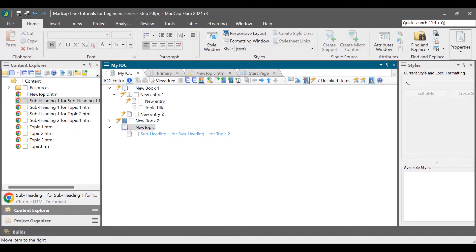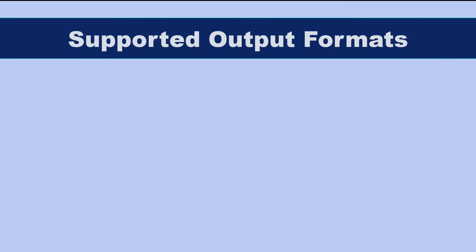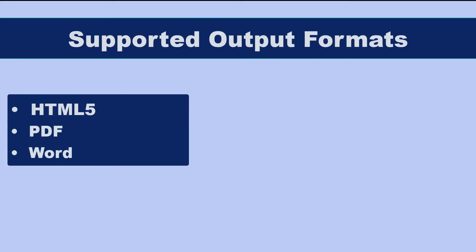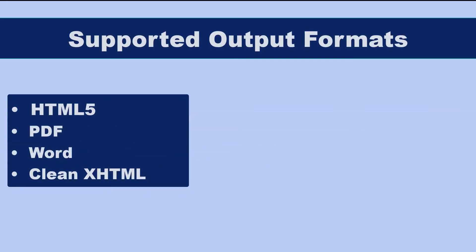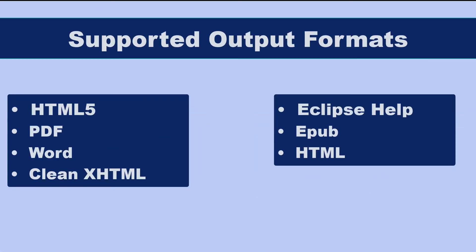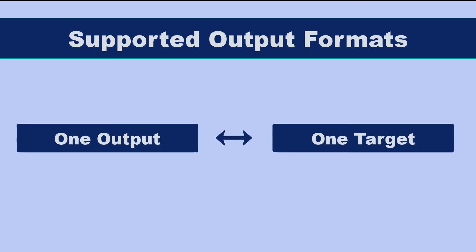Before producing an output, you must first decide what type of output you want to produce. Madcap Flare supports multiple output formats. You may need to generate multiple outputs of the same format — that's where the single sourcing feature comes into the picture. In Flare, the output is controlled using a target file. In simple terms, for each output you want to produce, there should be one target file.